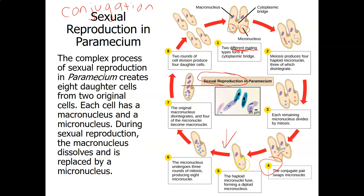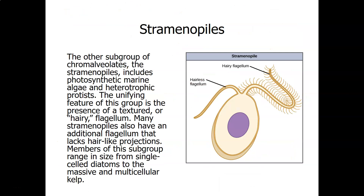For each paramecium, the micronucleus then divides three times by mitosis, giving eight micronuclei. Four of them fuse to become a macronucleus. That macronucleus divides to form four macronuclei. The result is a paramecium with four micronuclei and four macronuclei, which then divides by cell division into four daughter cells, each with one macronucleus and one micronucleus.